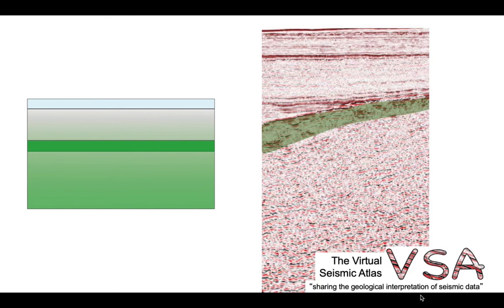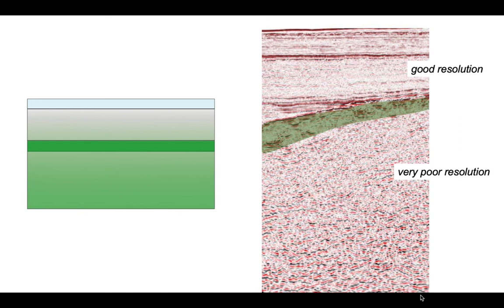Here's an example from the Faroe-Shetland Basin. It shows a layer in the seismic image thought to be a layer of basalt. Above this, there's good seismic resolution, but below there's very poor seismic resolution. Clearly, this basaltic layer is absorbing and scattering the seismic energy.